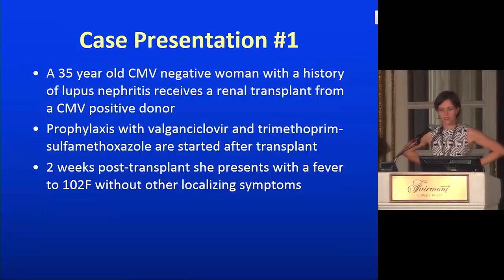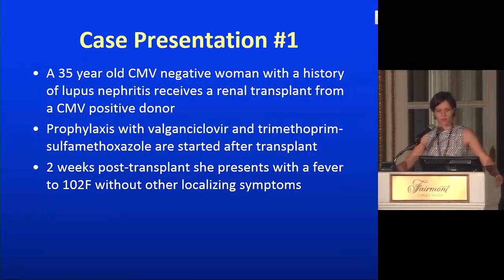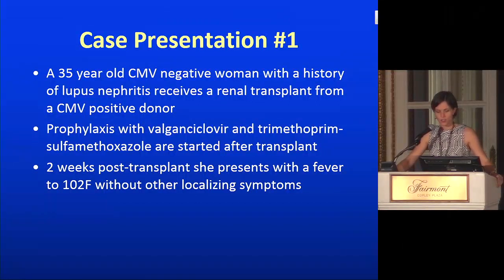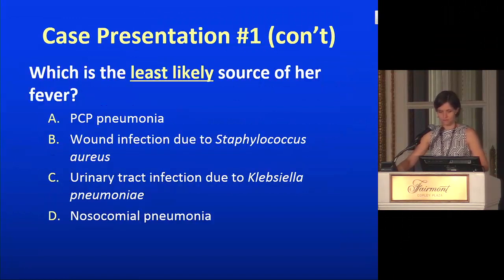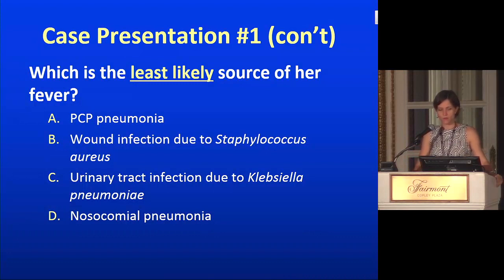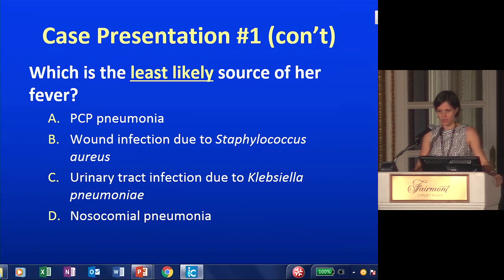Let's do the first case. This is a 35-year-old woman who is CMV negative with a history of lupus nephritis, and she has a renal transplant from a CMV-positive donor. The prophylaxis she gets is valganciclovir and trimethoprim-sulfamethoxazole right after transplant. She has an uncomplicated course and goes home, but two weeks post-transplant she presents with a fever to 102 without any localizing symptoms. Which is the least likely source of her fever — A: PCP pneumonia, B: wound infection due to Staph aureus, C: UTI due to Klebsiella pneumoniae, or D: nosocomial pneumonia?